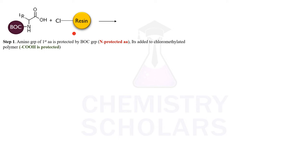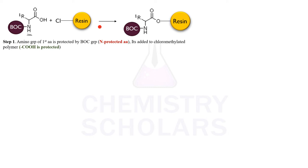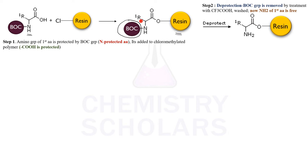Now let's study the stepwise reaction. In the first step, we have the first amino acid protected by the BOC group, which is the tert-butyloxycarbonyl group. This is an N-protected amino acid because the amino group (nitrogen) is protected. It is added to the resin in the first coupling reaction, supporting the amino acid on the solid phase.